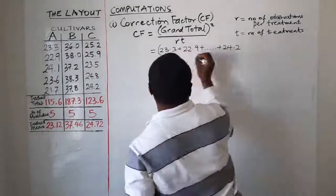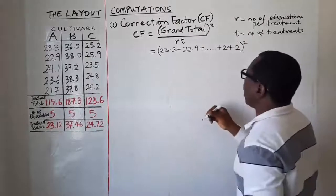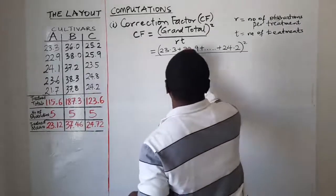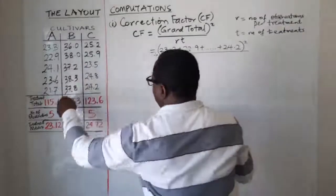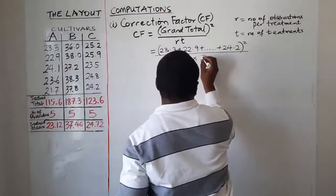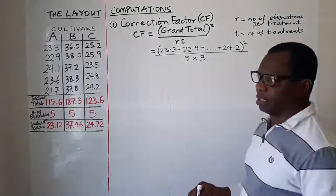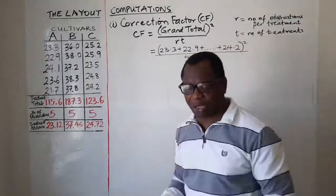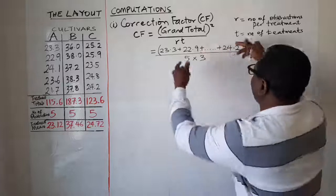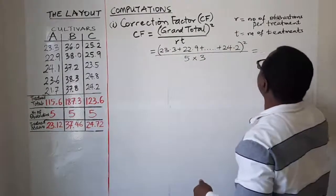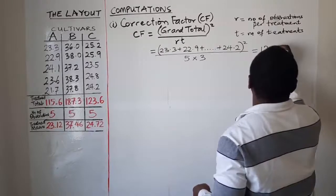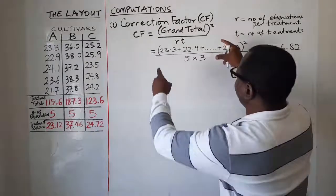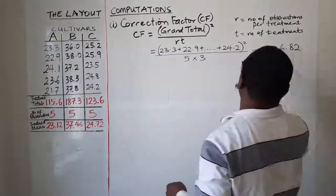You then square that grand total value and divide everything by r times t — r is 5 and t is 3. When you evaluate this using a calculator, you will get CF equals 12126.82.